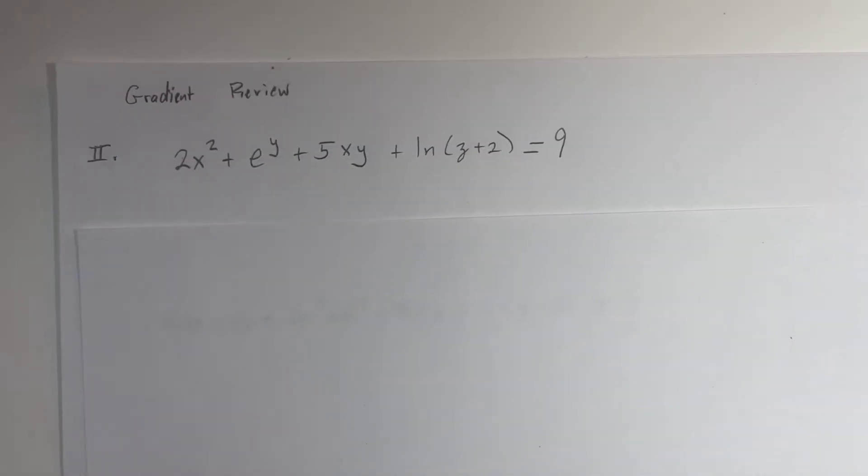All right, let's continue. We're still reviewing the concept of gradients from before. Let's suppose we had something with three variables that wasn't written in function form, such as this equation here: 2x² + e^y + 5xy + ln(z+2) = 9.